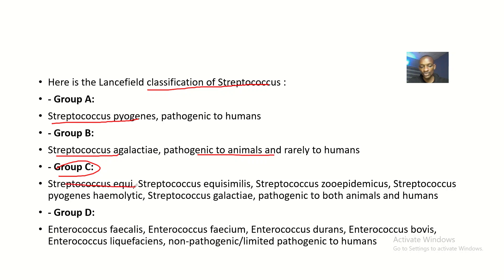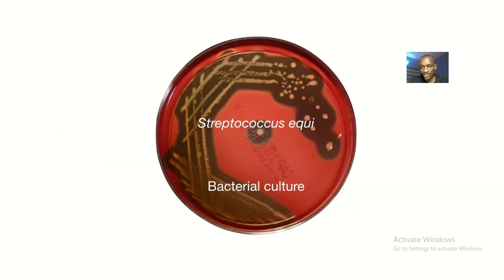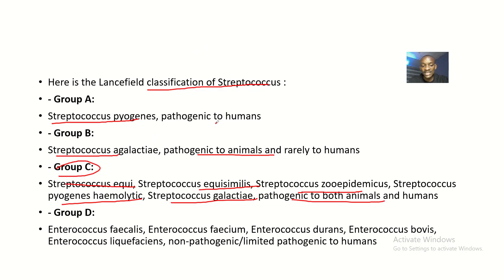In Group C we have Streptococcus equi, Streptococcus equisimilis, Streptococcus zooepidemicus, Streptococcus pyogenes hemolytic, and Streptococcus agalactiae — all pathogenic to both animals and humans. Here is a picture of a culture medium of Streptococcus equi, as it is the most well-known amongst the Group C organisms.